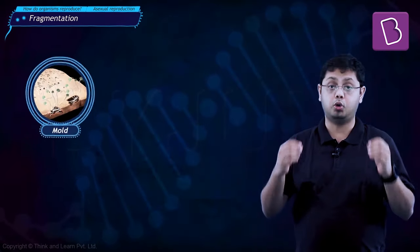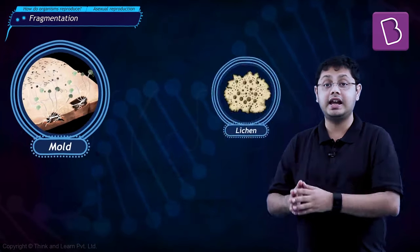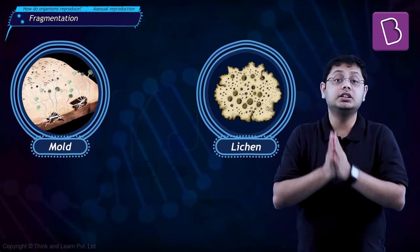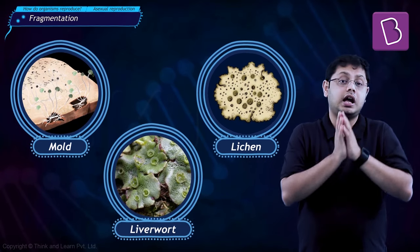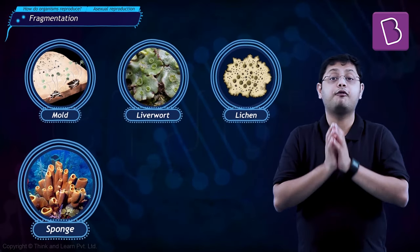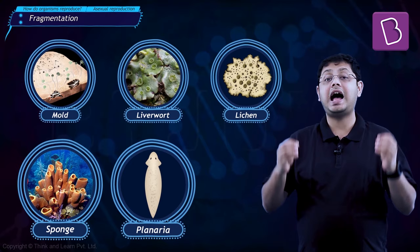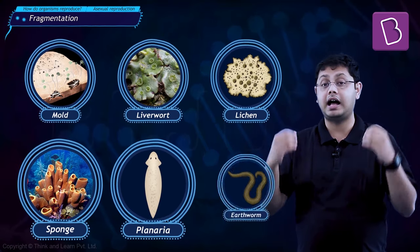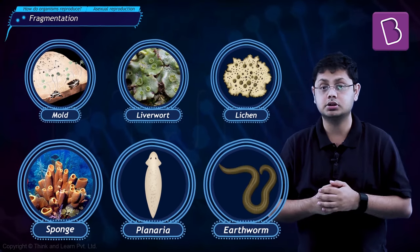Fragmentation as a method of reproduction is also seen in organisms such as molds, lichens, certain plants, animals like sponges, flatworms, and some annelid worms.